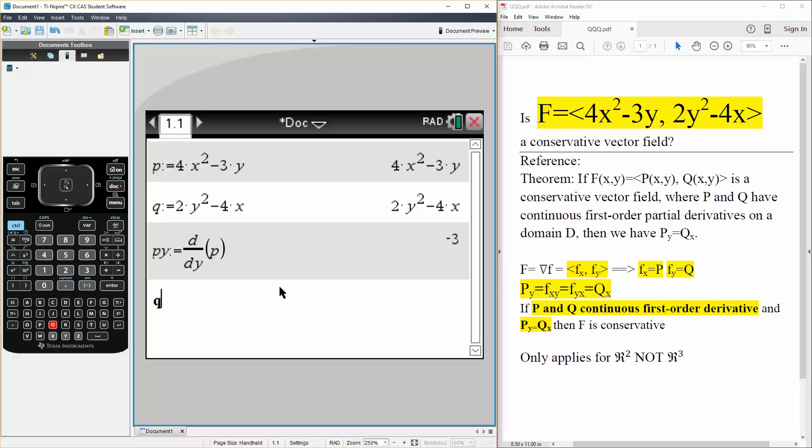We say partial derivative in terms of x for Q, and we can say defined as, we do shift minus, this time would be the derivative in terms of x. So the partial derivative of Q. Hit enter,